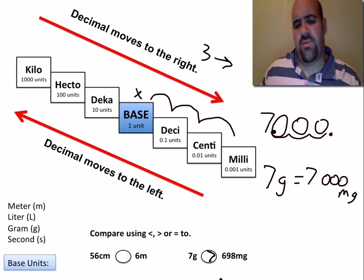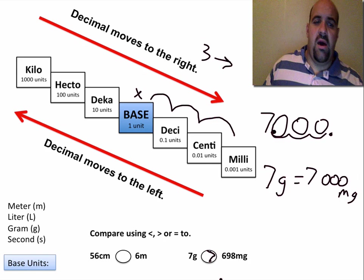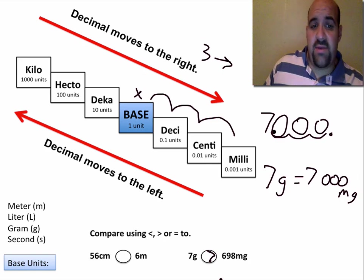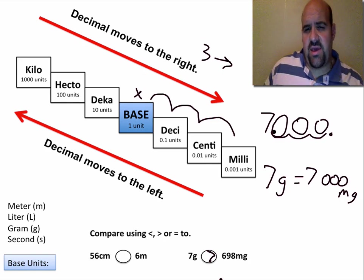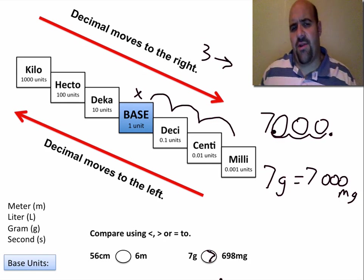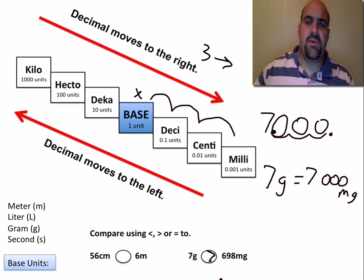And that's how we do those. Remember: King Henry died by drinking chocolate milk. Hopefully this helps you use the ladder method for metric conversions. Mrs. Spoon, out.